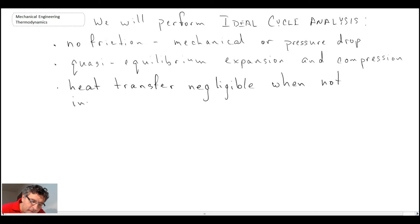Another thing that we will assume as part of ideal cycle analysis is that heat transfer is negligible when not intended. Now we will have heat transfer, and I'll talk about that in a moment. That's how we actually heat the working fluid. But where would it be negligible when not intended? That might be the pipes that are connecting one component of the engine cycle with another.